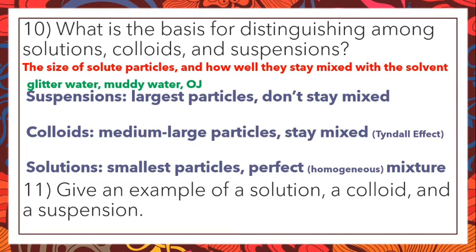Orange juice — pulpy orange juice — is another suspension example. Even if it's not big chunks of pulp, if it's not filtered enough, there will be some really small particles that tend to settle to the bottom and get kind of thick. Some apple juices do that too — more natural, less processed apple juices will have some sediment at the bottom.